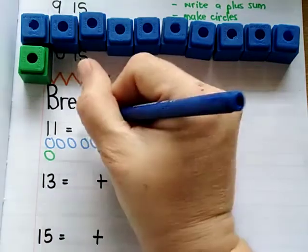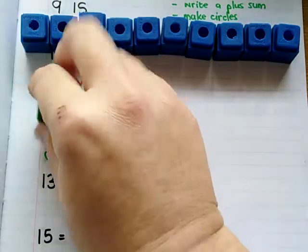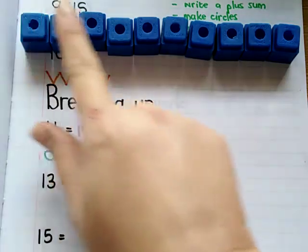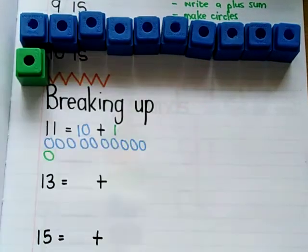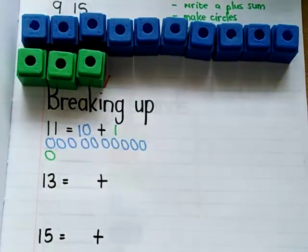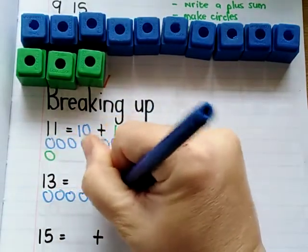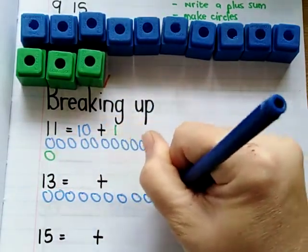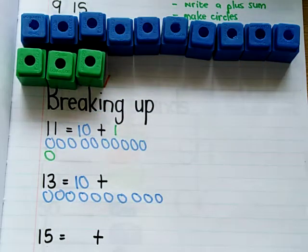Now if I do 13, again I want to see I've got my group of 10 at the top. After 10 comes 11, 12, 13. So when I draw it, once again my 10 goes at the top: 5, 6, 7, 8, 9, 10. I can write my 10, and after 10 comes 11, 12, and 13. So I've got 3 at the bottom.